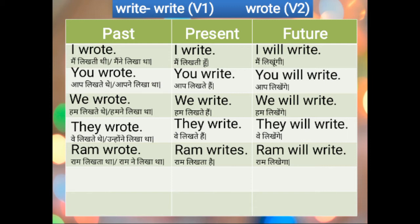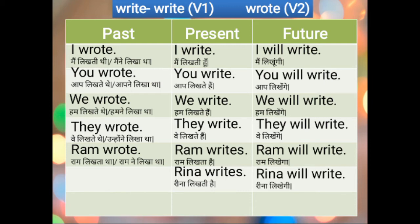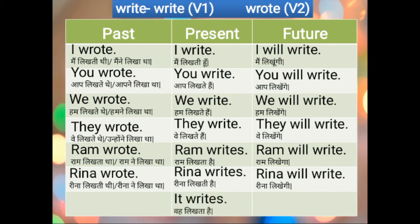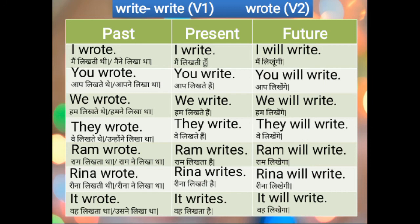The S rule is only for the present tense. RINA WRITES — again the S rule applies because it's present tense — RINA LIKHTI HAI. RINA WILL WRITE — RINA LIKHEGI. RINA WROTE — RINA LIKHTI THI, aur RINA NE LIKHA THA. IT WRITES — VAH LIKHTA HAI. IT WILL WRITE — VAH LIKHEGA. IT WROTE — VAH LIKHTA THA, ya USNE LIKHA THA. Here, 'it' could be a machine, or maybe a baby trying to write for the very first time.